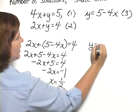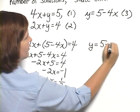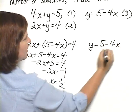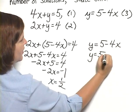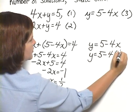So I have y equals 5 minus 4x. I now know x is 1 half, so I have y equals 5 minus 4 times 1 half.